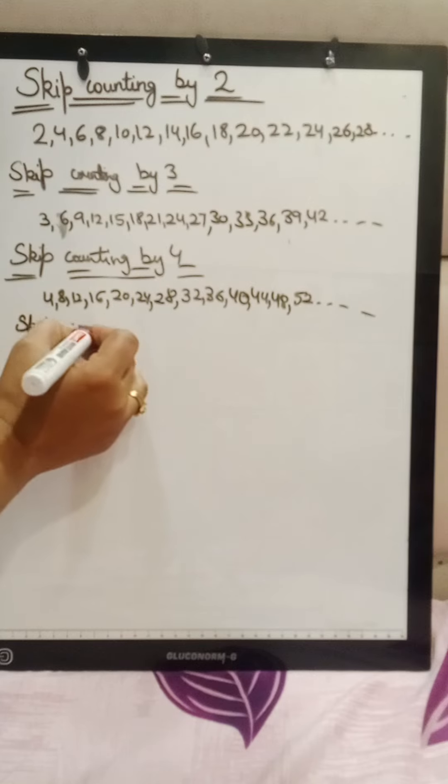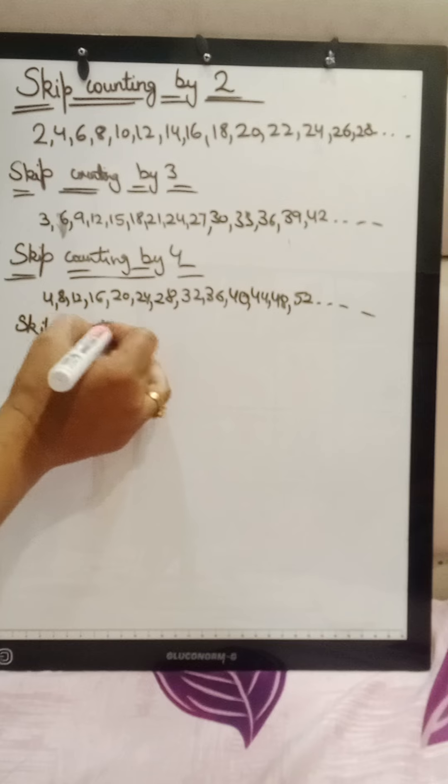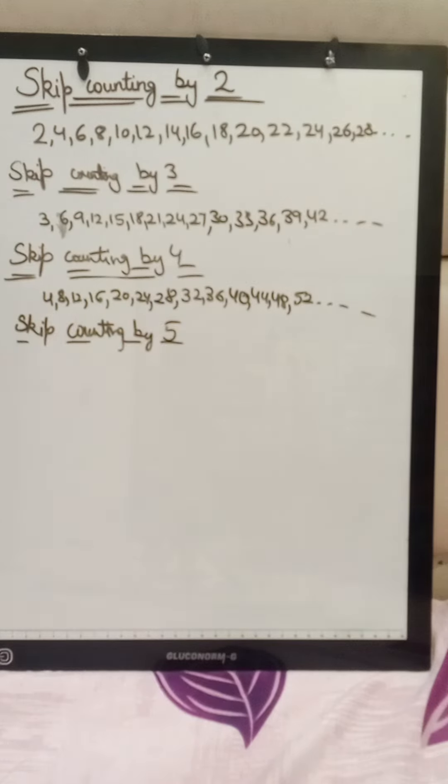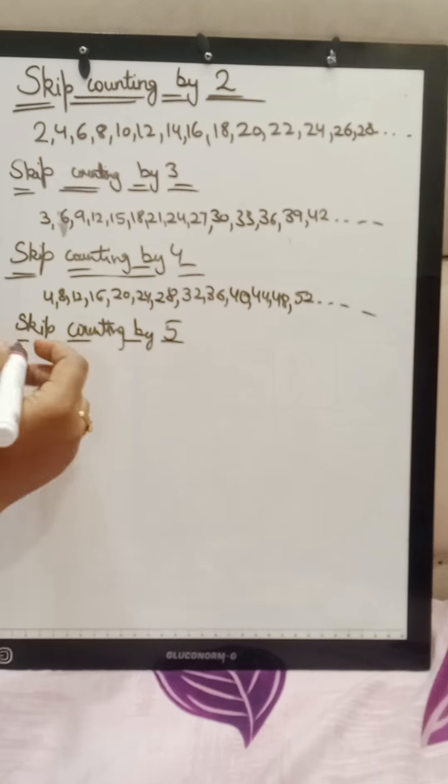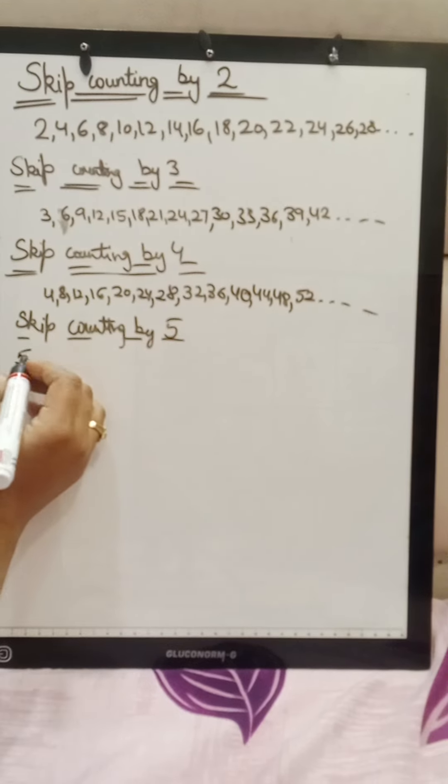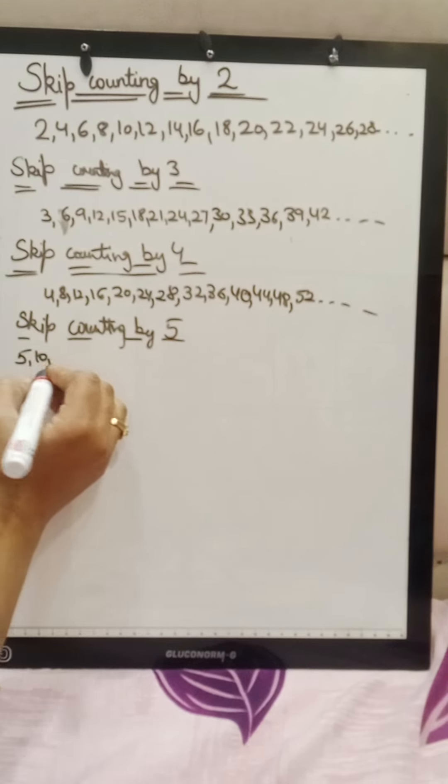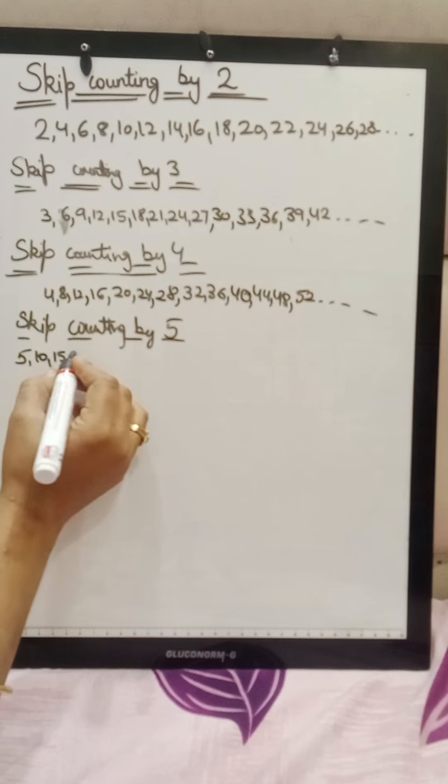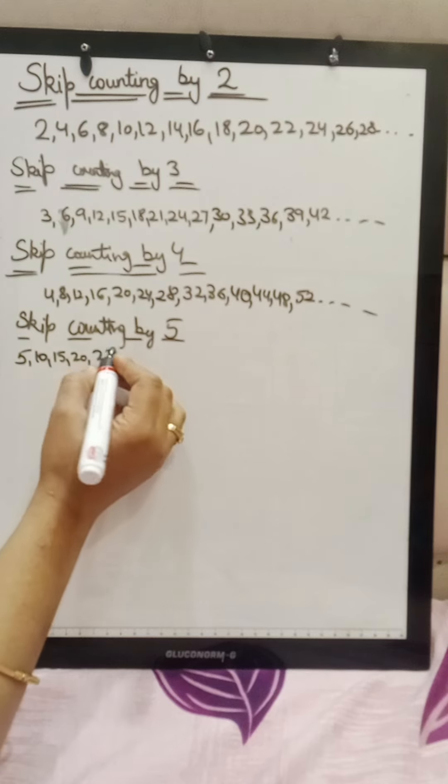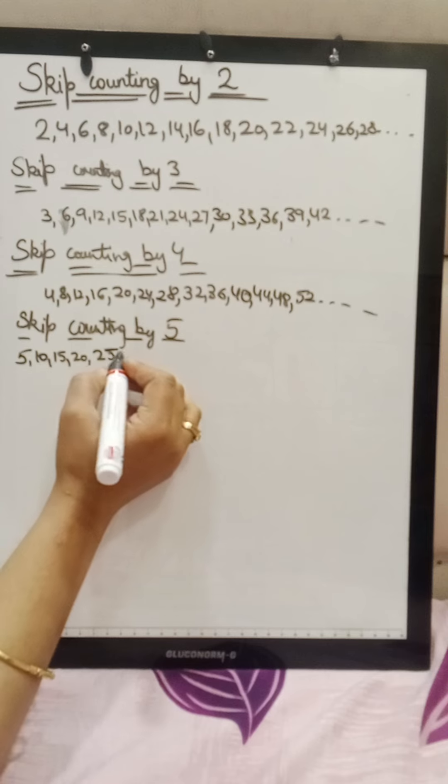Now is skip counting by 5. So what is the skip counting of 5? First we wrote 5. We will keep adding 5, 5 plus 5, 10, 10 plus 5, 15, 15 plus 5, 20, 20 plus 5, 25, 25 plus 5, 30.